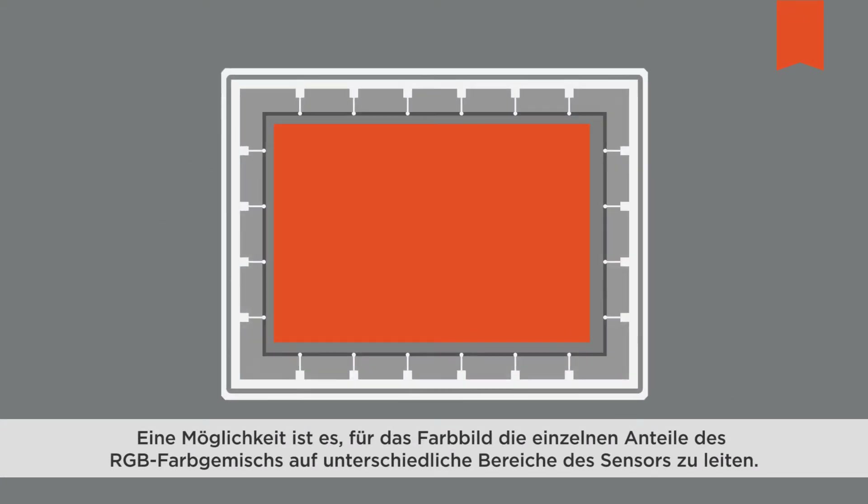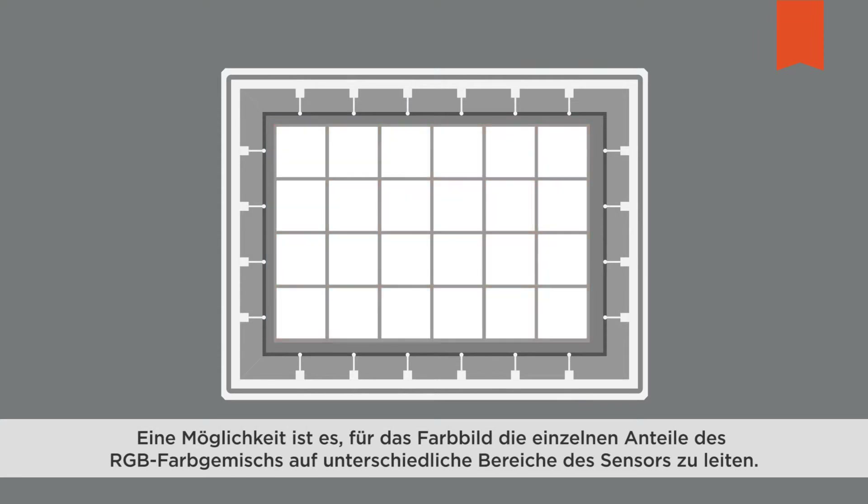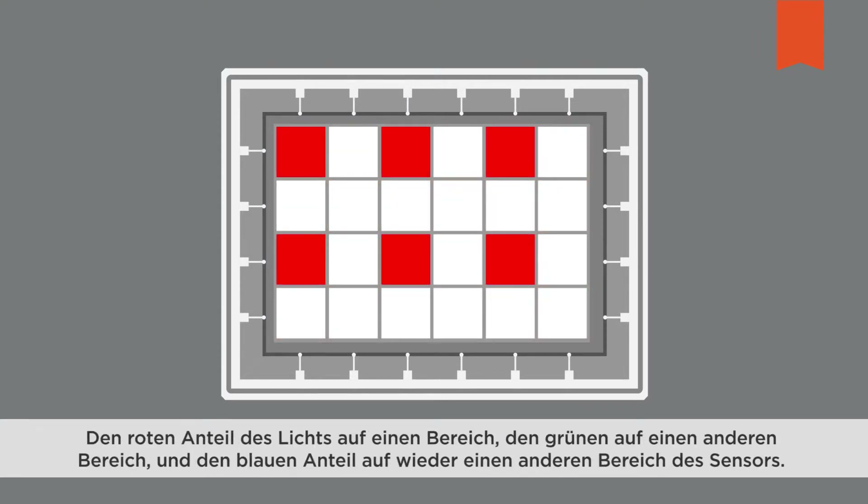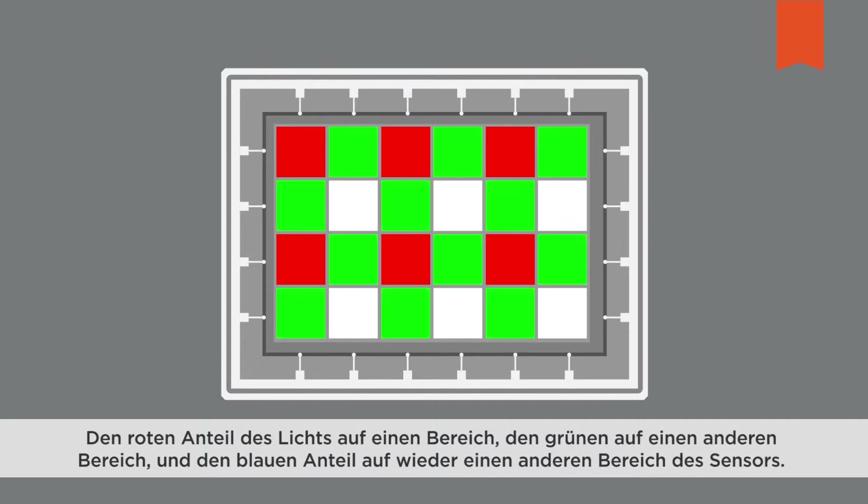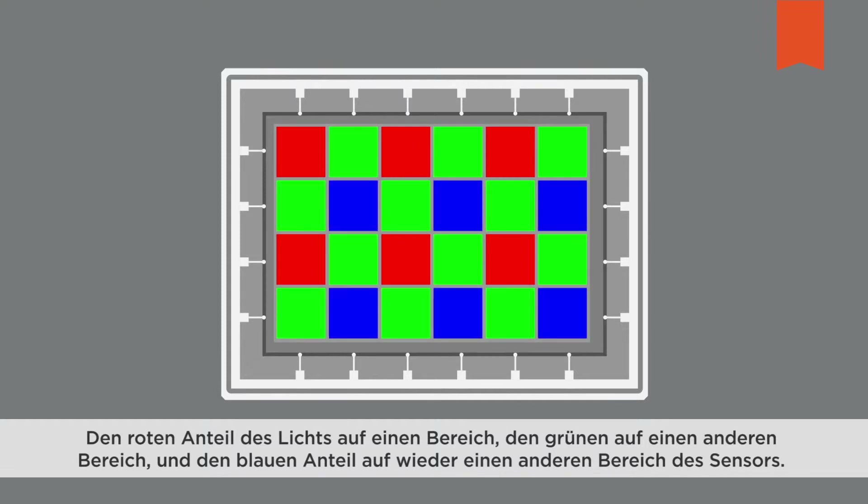For a digital color image, we need the color value for each individual pixel. There are two common ways to calculate this color value. Visible light is comprised of a mixture of pure colors described by wavelength, ranging from red to green and blue. One option is to channel different portions of the RGB color mixture to different portions of the sensor using a mesh of tiny filters known as the color filter array, placed in front of the sensor's pixels.